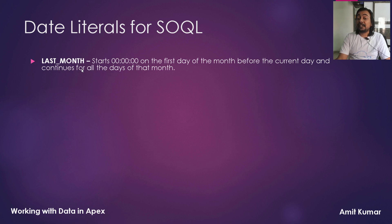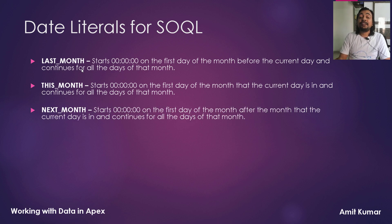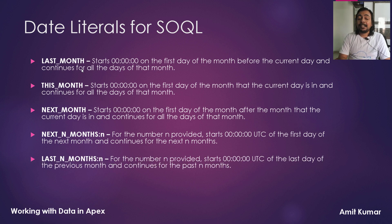Last month starts 12 AM on the first day of the month before the current day and continues for all the days of that month. This month starts 12 AM on the first day of the month that the current day is in and continues for all days of that month. Next month starts 12 AM on the first day of the month after the current month and continues for all days of that month. Next N months starts 12 AM UTC of the first day of the next month and continues for the next N months. Last N months starts 12 AM UTC of the last day of the previous month and continues for the past N months.